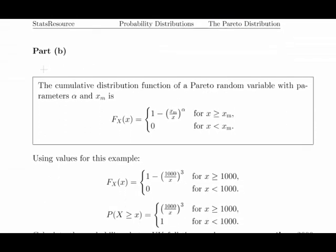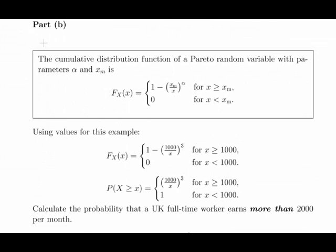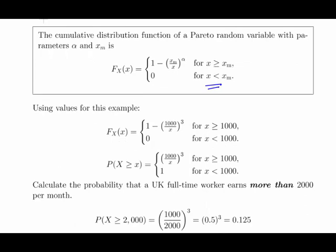The cumulative distribution of a Pareto random variable with parameters alpha and XM is: F(x) = 1 minus XM divided by X to the power of alpha, for X greater than XM; and 0 otherwise. XM is the minimum possible value, so the probability of being less than XM is 0. Using the values for this question, that becomes 1 minus 1,000 divided by X to the power of 3, for X greater than 1,000.